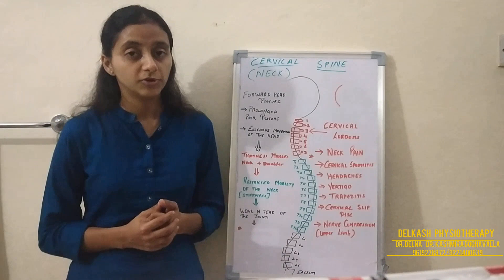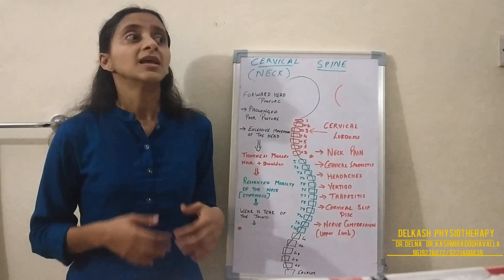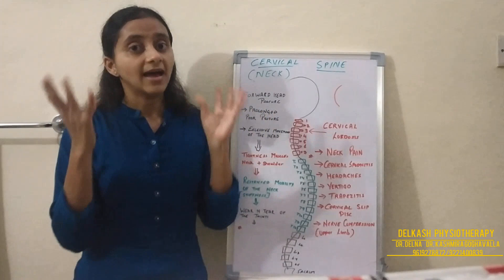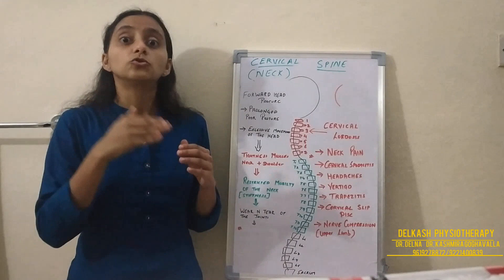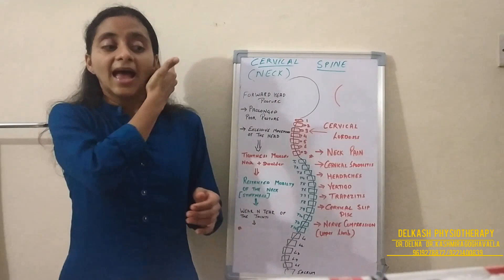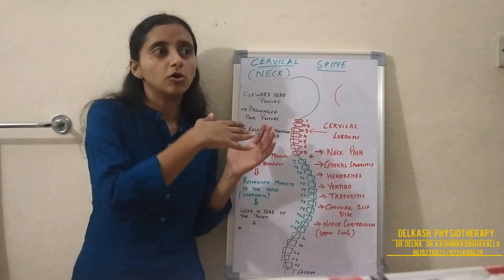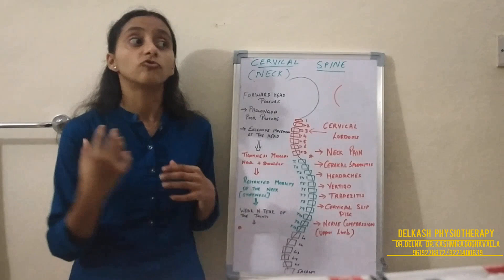Another common condition is cervical slip disc — just as you can have a lumbar slip disc in the lower back, you can have a slip disc in the cervical region. Many patients complain of tingling sensation in the arms and hands. This occurs because a nerve is getting compressed in the neck — either due to a disc pressing on the nerve or bony prominences from degenerative changes pressing on the nerve — causing tingling sensation in the hands. The root cause of most neck problems traces back to poor posture, excessive neck movements, and wrong neck movements.